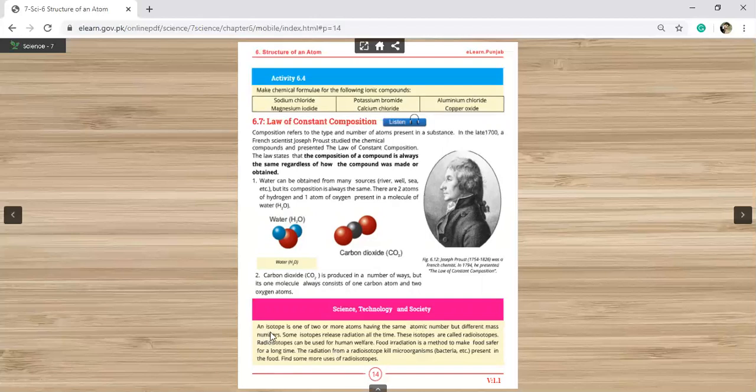An isotope is one of two or more atoms having the same atomic number but different mass number. The atomic number is the same but the mass number is different, i.e. number of neutrons are different.